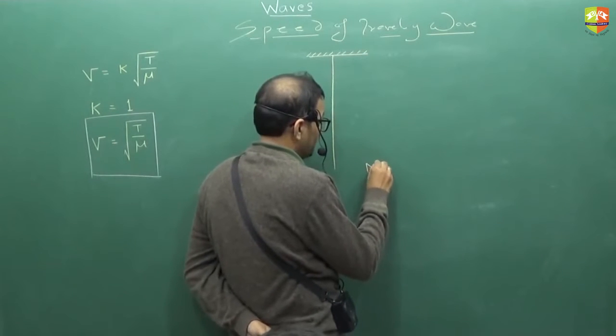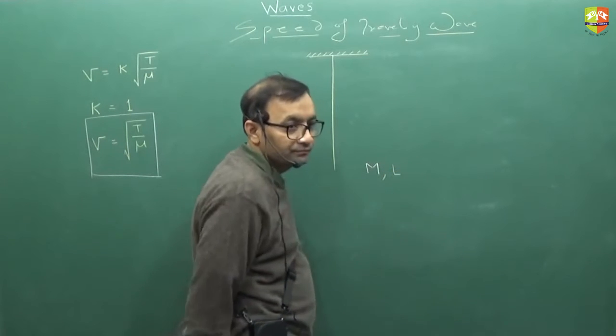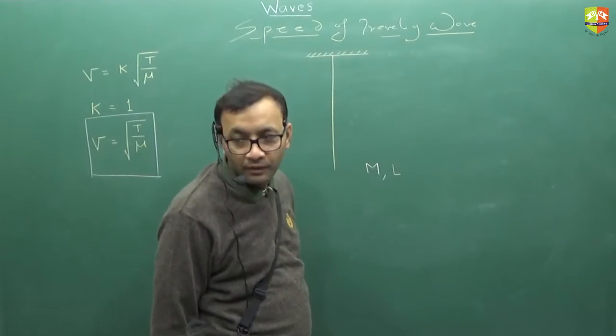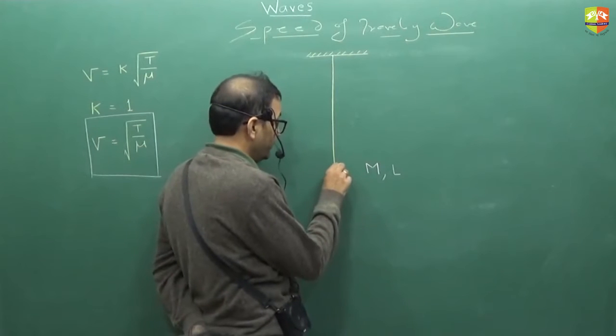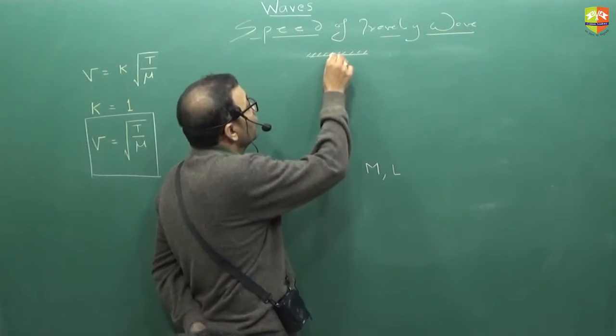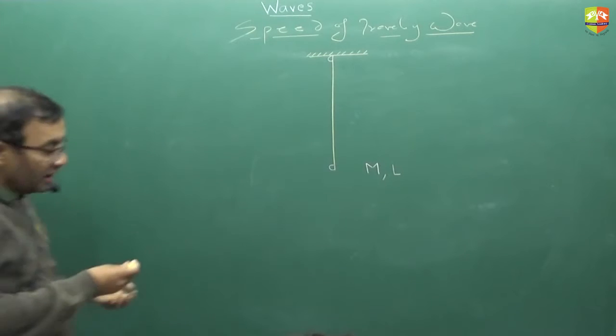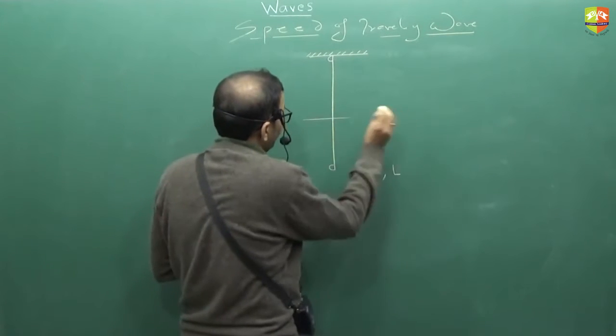Total mass of this rod is m and length is l. Okay. You need to find out how much time a disturbance from here will take to reach here. Is tension same everywhere? No. Tension is not uniform.